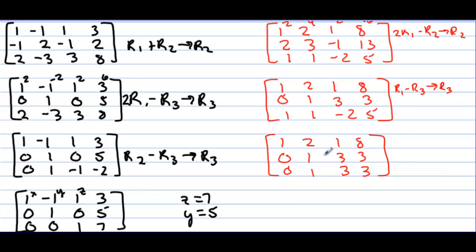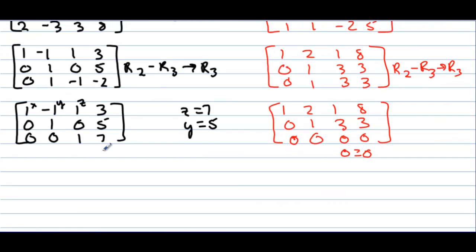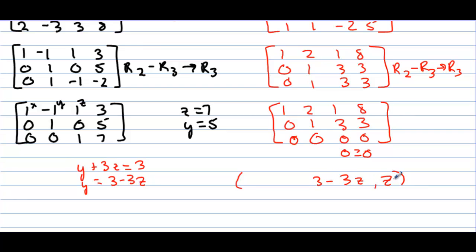Now take row 2 minus row 3 and replace row 3. We get all zeros: [0, 0, 0 | 0]. Our statement says 0 = 0, which is true. The solution is not all reals — there are infinitely many solutions, but not just any values. You can pick any z, and then y + 3z = 3, so y = 3 − 3z. Once you pick a z, all other coordinates depend on it.